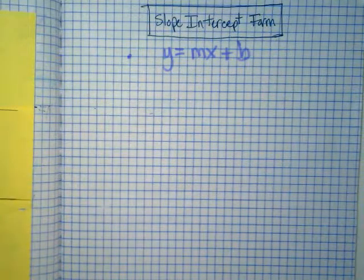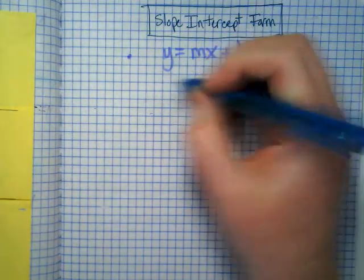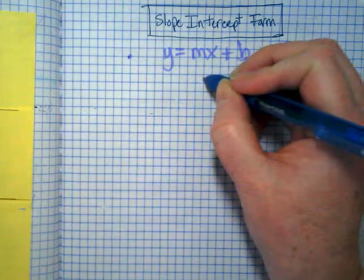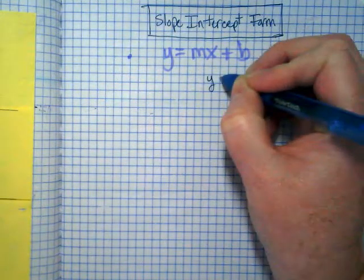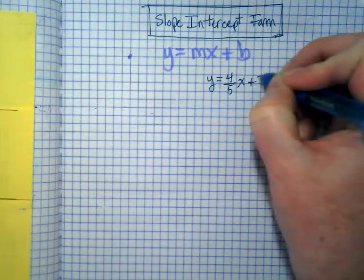So let's write the equation that we see on page 57 in graphing a linear equation: y equals four-fifths x plus 2.